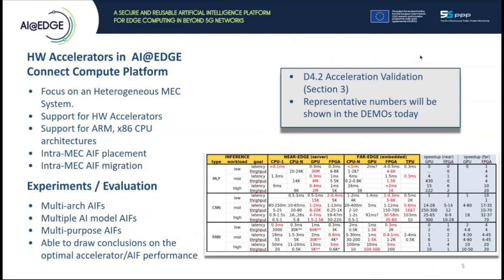As reported in Deliverable 4.2 in Acceleration Validation in Section 3, we used the testbed to experiment and evaluated the performance of a big variety of AI models and hardware devices, with the results included in the table. We used AIFs with different AI models built with binaries for many different heterogeneous platforms including hardware accelerators, while we also varied the configuration knobs to further increase the solution space for AIFs with the same functional requirements. The table aggregates several tests; in the following videos we will discuss two representative examples.